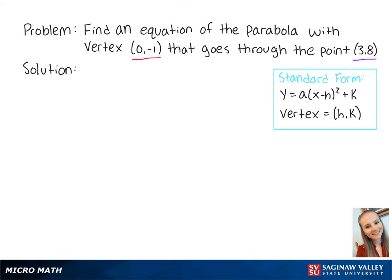So we get y = a(x - 0)² - 1. Now we plug in the point (3, 8) and solve for a. So we get 8 = a(3 - 0)² - 1,